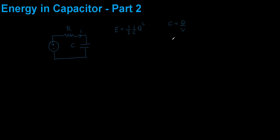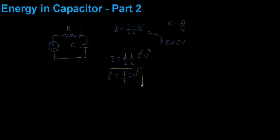We can write charge in terms of capacitance and voltage, and if you substitute this into the equation you see that energy is equal to half times 1 over capacitance times capacitance squared times voltage squared, giving us one half CV squared. This is the most common way of writing the formula, as one usually doesn't use charge.